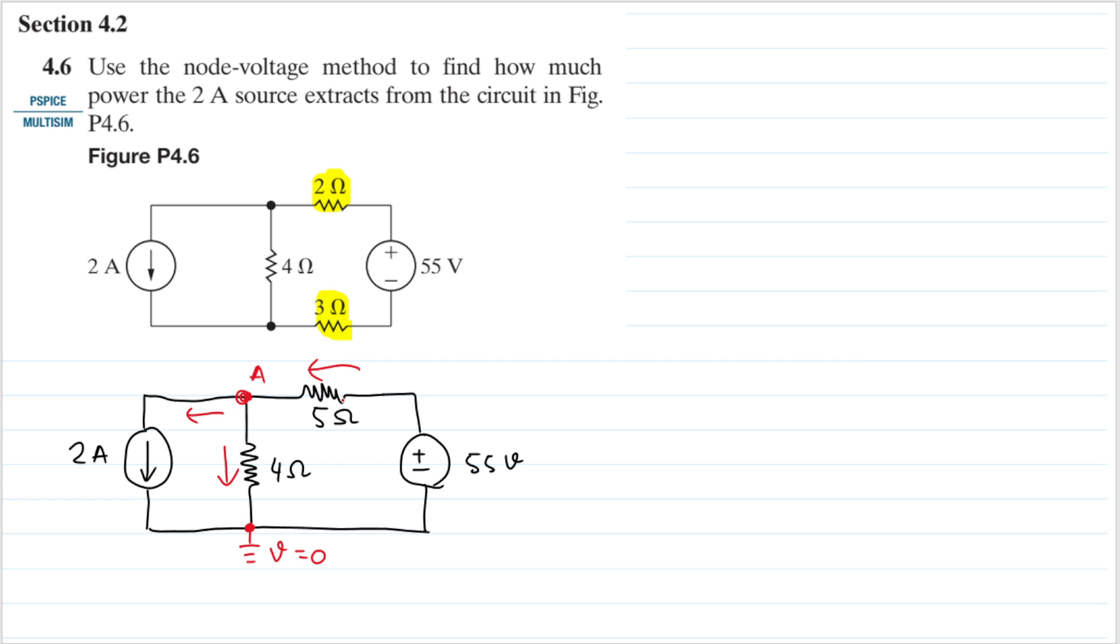We can do KCL at node A. KCL says that the sum of the current that goes in will equal to the sum of the currents that goes out. Now the only current that goes in is this current here.